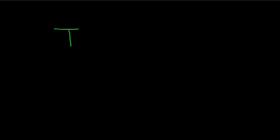In this video, we're going to show that a set is not closed under vector addition. So our set is going to be capital T, and it is the set of all vectors x, y, such that y is equal to the square root of x.